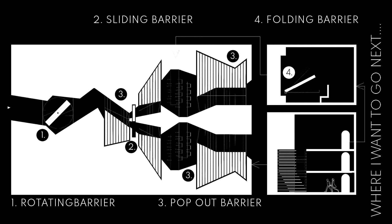First, the floor bridge rotates, creating a void between two spaces and a bridge when safe to cross. Secondly, the glass curtain wall slides to one side or the other, depending on which direction it thinks the participants should go. Third, the stairs pop in and out of the walls to restrict access to different levels depending on where the safest place to be, so different groups of people don't need to touch the same surfaces. They alternate.